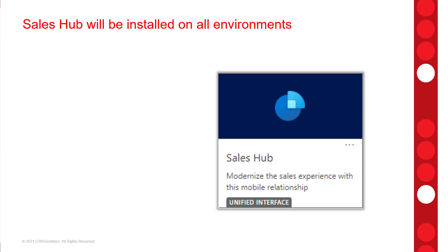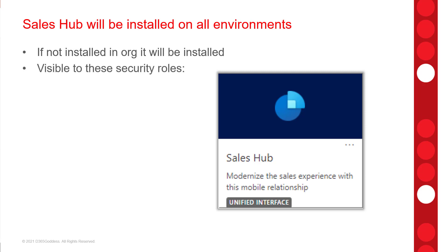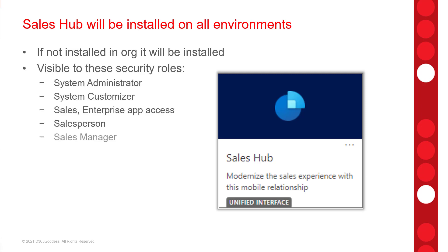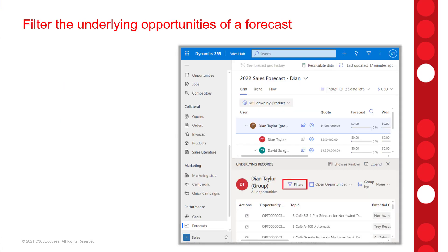There is really not a lot to explain here because the title kind of says it all. If your organization does not have the Sales Hub model-driven app installed, it will be pre-installed in the environments. It will only be visible to users with certain security roles — by default: System Administrator, System Customizer, Sales Enterprise App Access, Salesperson, Sales Manager, and VP of Sales.